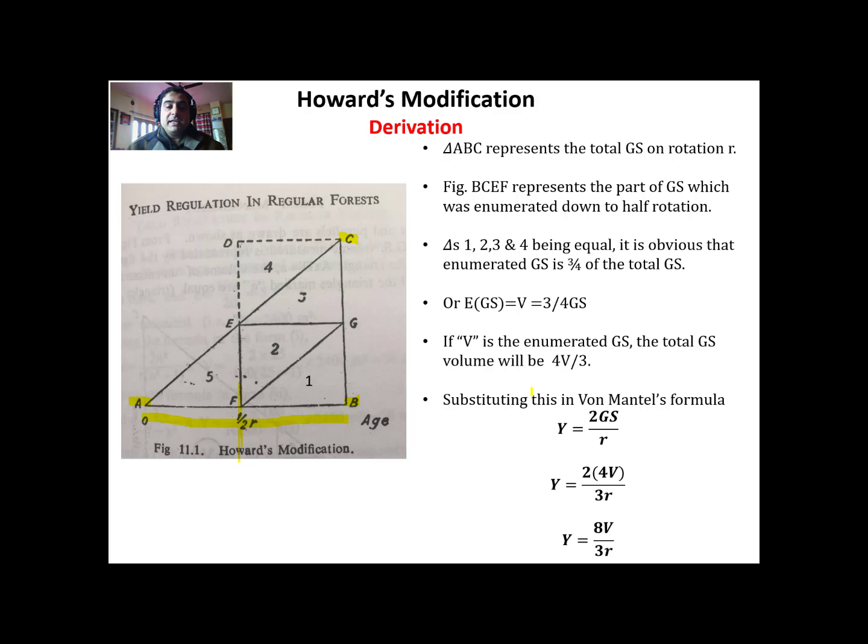Howard's modification allows you to estimate yield based on the growing stock which has been enumerated down to half the rotation age.